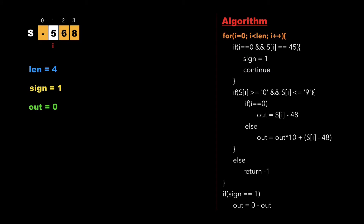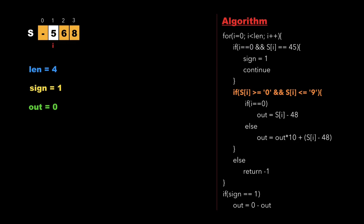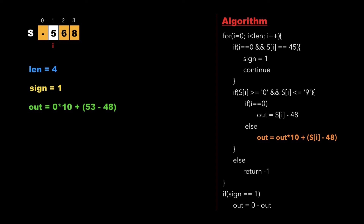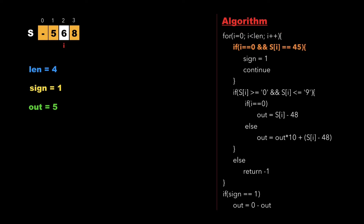Now i is incremented and points to the character 5. We check if i equals 0 — which is false. So we check the next condition: whether s[i] is between '0' and '9'. Since 5 lies between 0 and 9, this condition is true. Inside the nested if-else, i equals 0 is false, so we go to the else part and update out as out*10 + s[i] - 48. Subtracting the ASCII value of '0' (48) from the ASCII value of '5' gives out = 5.